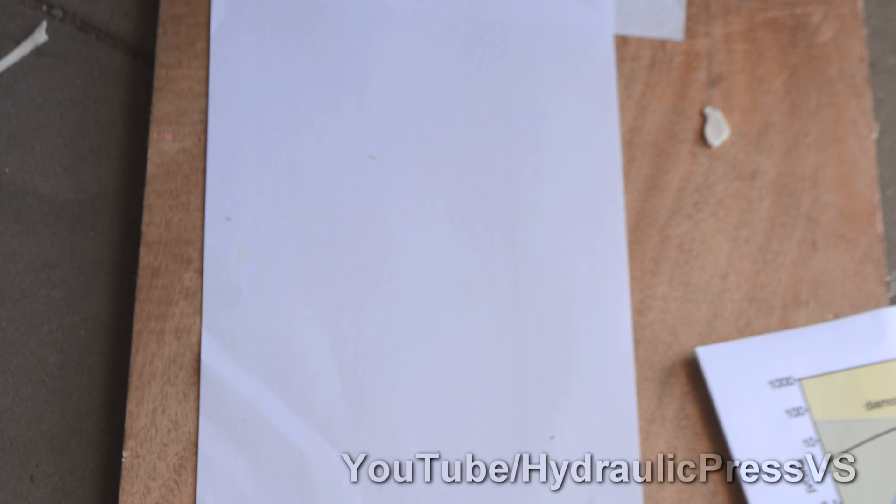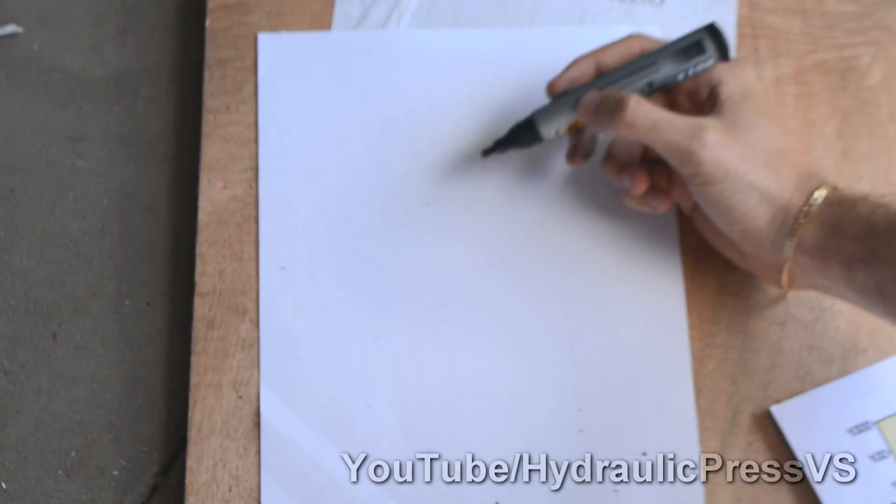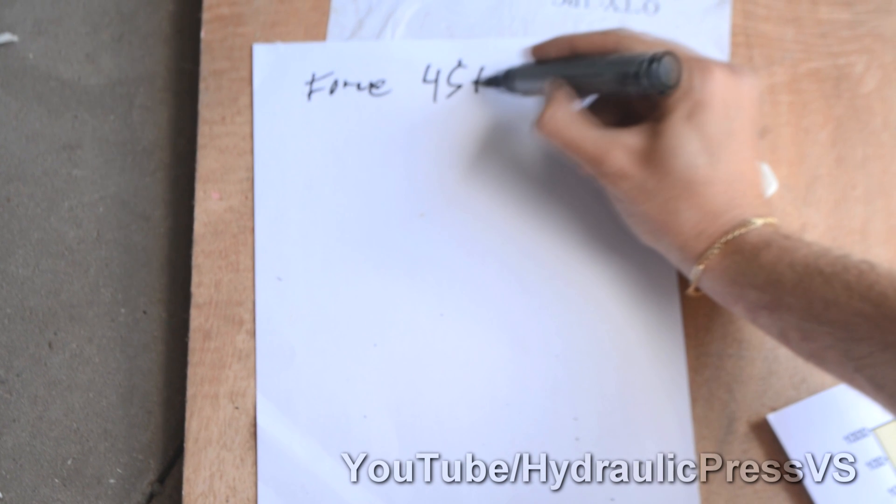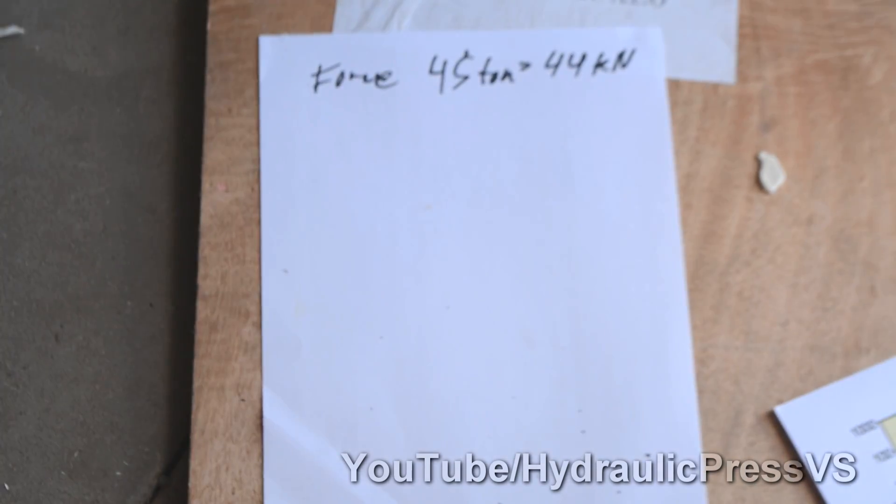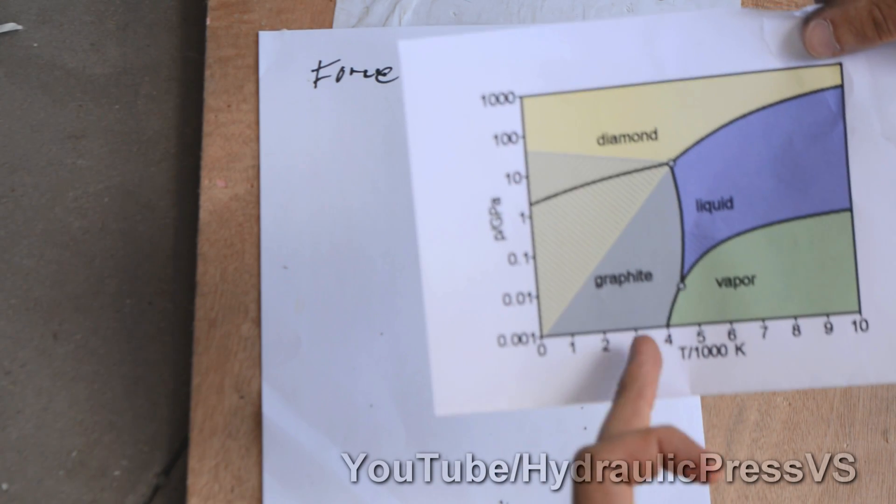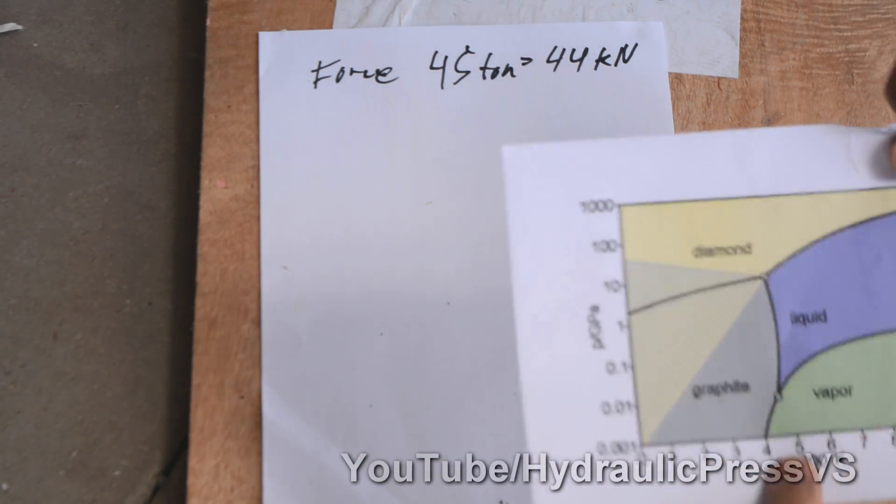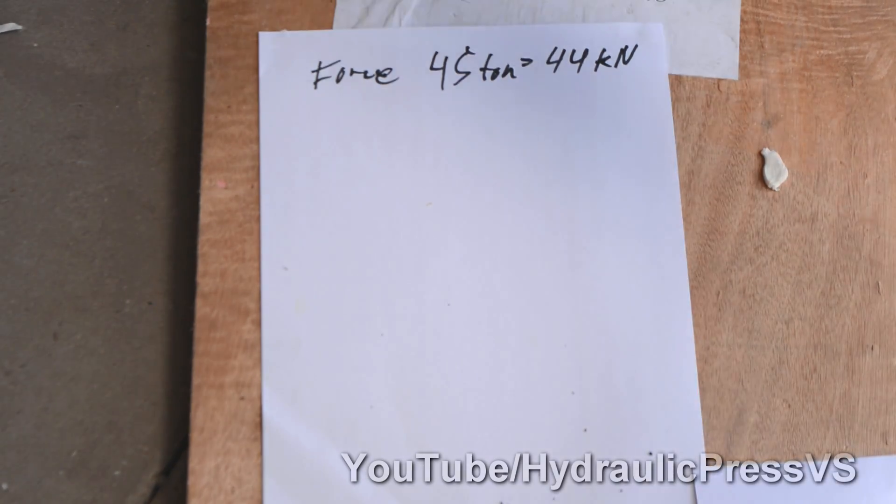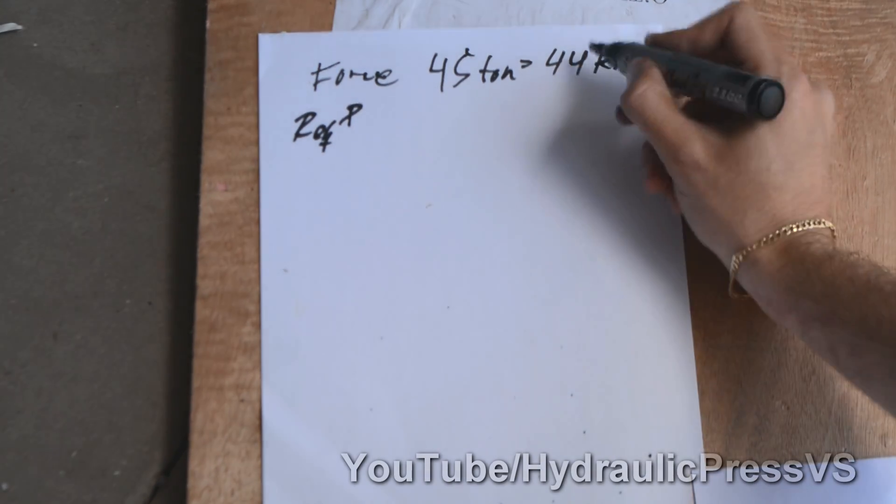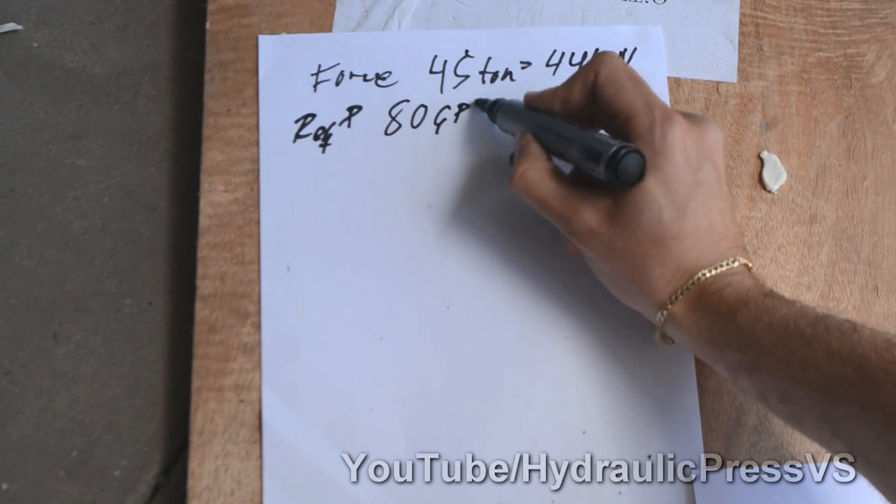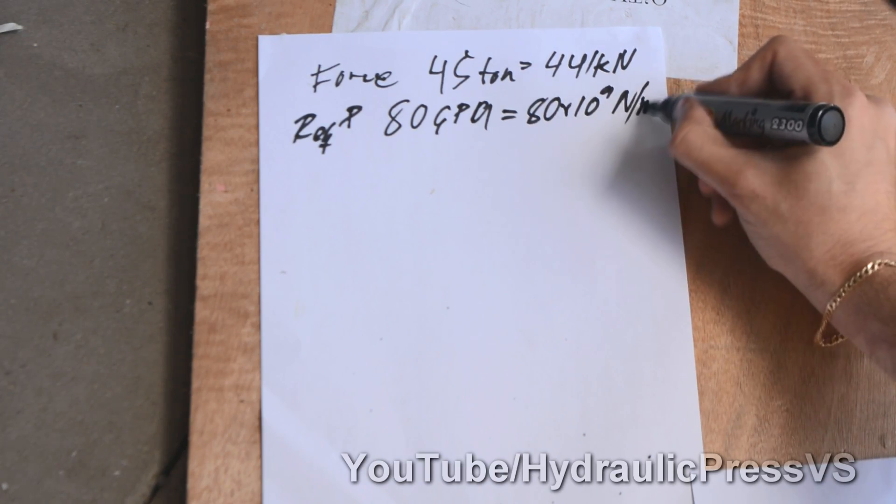So we're gonna show you some mathematics here to see how much diamond we can make or not make. So we have the force of the press which is 45 tons and this equals 441 kN. And we know from this chart here because obviously we can't go up to 3 or 4,000 Kelvin, so we want to stay at this first like room temperature. So we're gonna need at least 80 GPa. So required pressure.